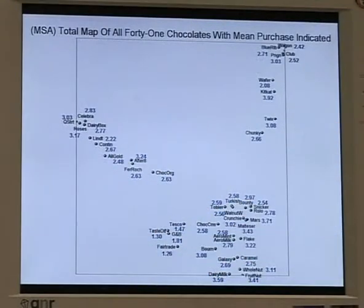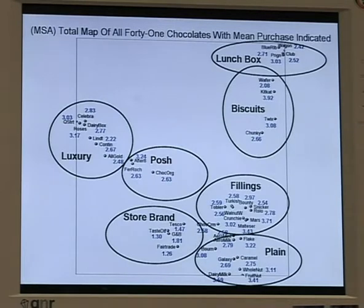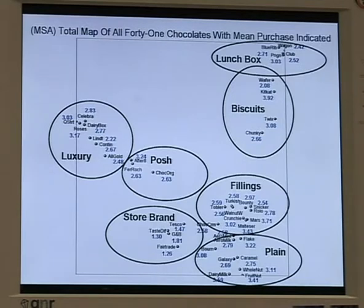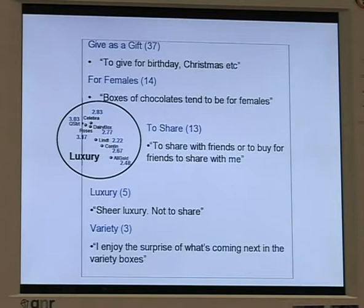There are many more than these simple three functions. We can identify a whole range of different ways in which these chocolates can be of use to people. We can explore these functions and uses by looking at the detailed comments that people make in the group discussions and in their individual writing — so that we can take a particular group of these more luxurious significant chocolates and see that they are described as a birthday present, or they tend to be for women, or to share with friends.